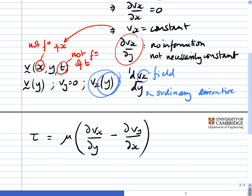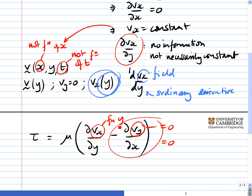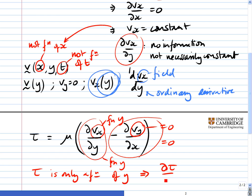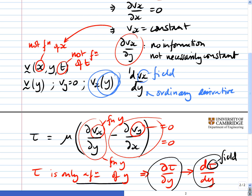Now this is the formal expression for tau, the shear stress. It can be simplified straight away because vy = 0, so that whole term is equal to zero. Looking at whether tau is a function of x and y or just a function of y: because vx is just a function of y, dvx/dy can only be a function of y, and therefore tau is only a function of y. In other words, any d(tau)/dy terms can also become ordinary derivatives. Tau remains a field quantity, but because that field is only a function of y, we can convert the partial derivative to an ordinary derivative.